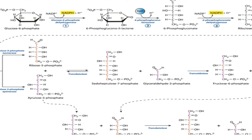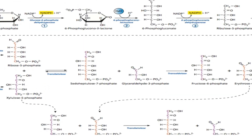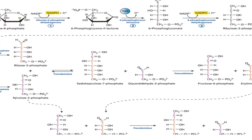Then again, xylulose 5-phosphate (five carbon) and erythrose 4-phosphate (four carbon) are combined — the total number of carbon atoms becomes nine — and we get glucose 6-phosphate again. It also gives fructose 6-phosphate and glyceraldehyde 3-phosphate, both of which may enter glycolysis directly.